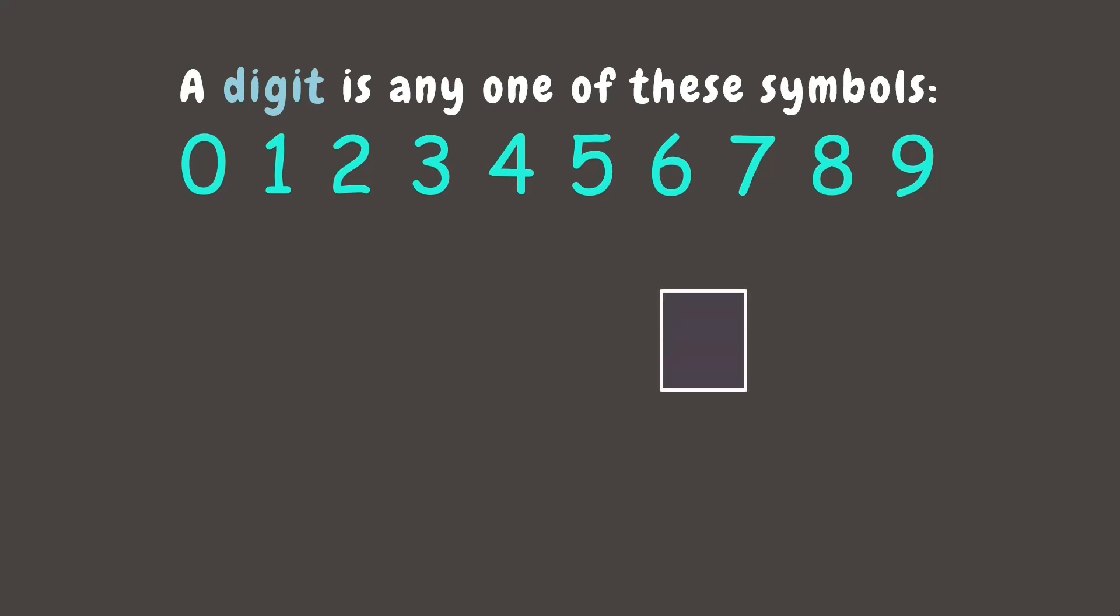When we count, we start from 0, which means none. Then the numbers go up as we keep on counting. The last single digit number is 9. This is called the one's place.